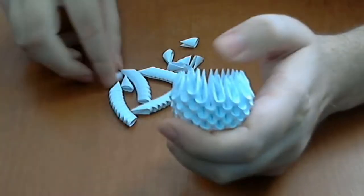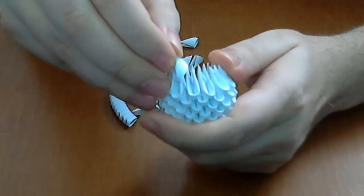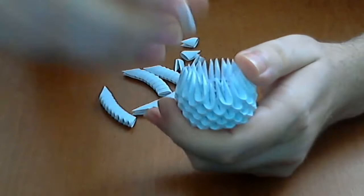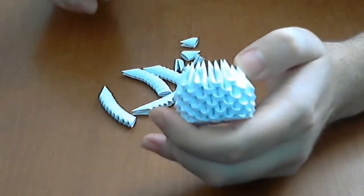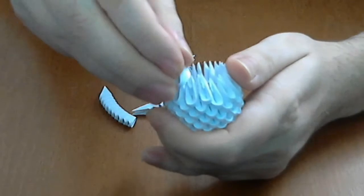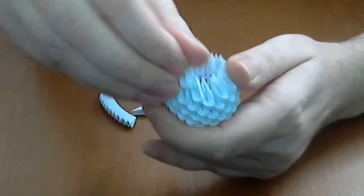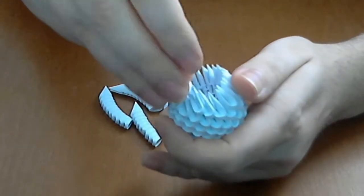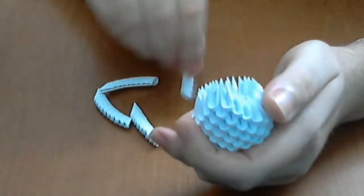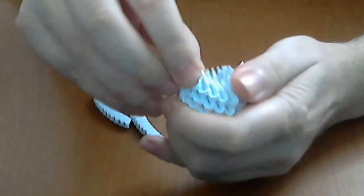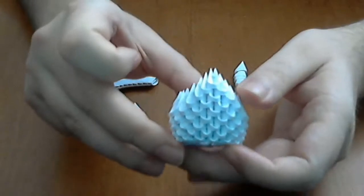We put another 2 rows. And now we will make the chest. Let's put 4 white pieces, 3, 4. Then we will put 3 pieces above, then 2, and in the end 1. Like this.